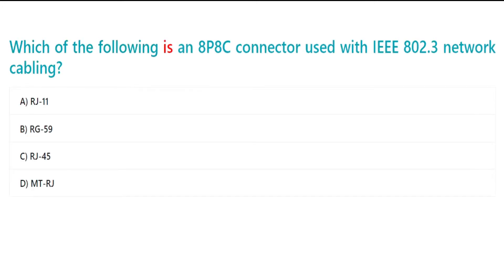Which of the following is an 8P8C connector used with IEEE 802.3 network cabling? A. RJ11. B. RG59. C. RJ45. D. MTRJ.